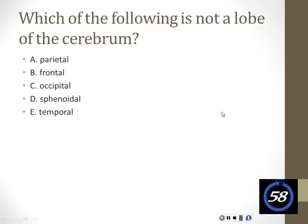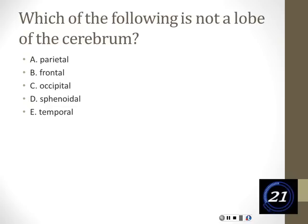Quiz question: Which of the following is not a lobe of the cerebrum? The answer is the sphenoid, which is a bone in the skull with no lobe associated with it. The other options — parietal, frontal, occipital, temporal — are lobes named after the skull bones that overlie them.